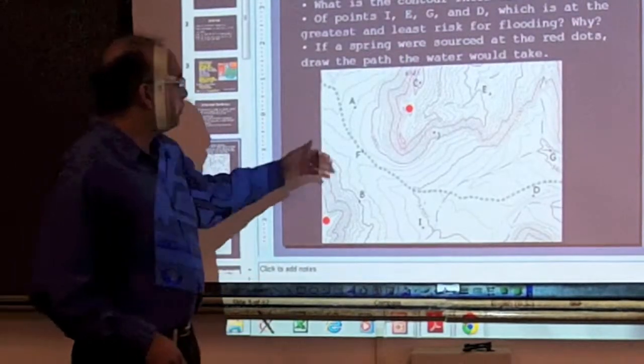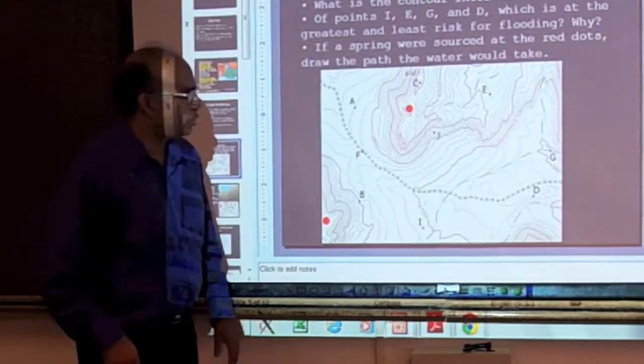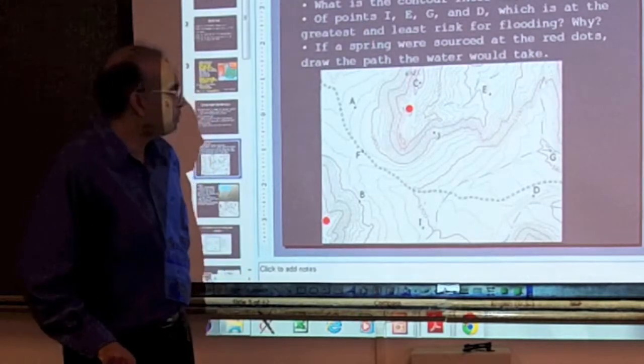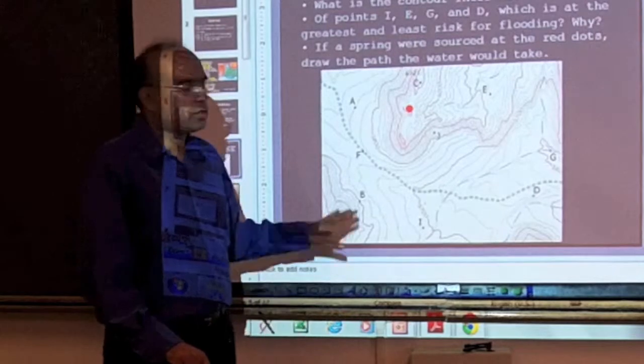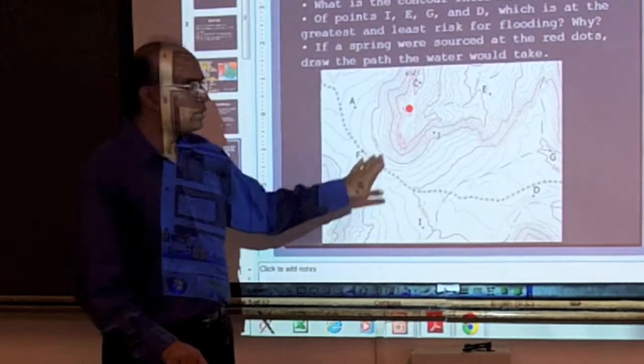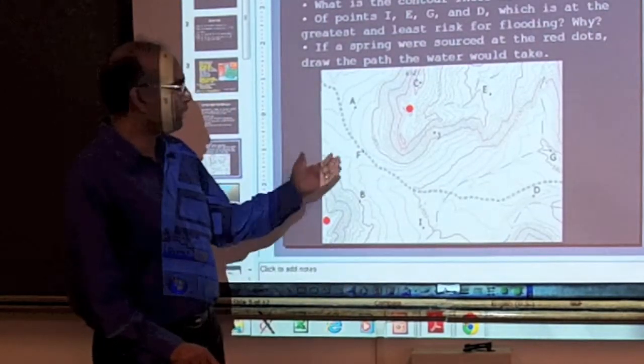Here's an example of a map. It's a contour map. It's a USGS map. One of the things that you're going to want your students to do is to understand how to read something like this. What are we looking at here?